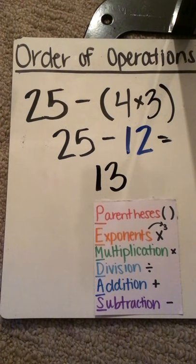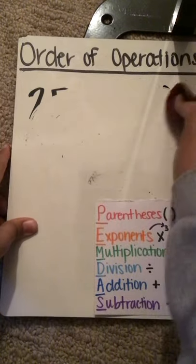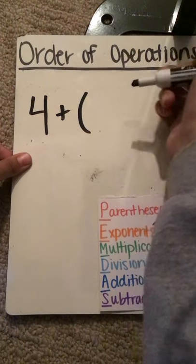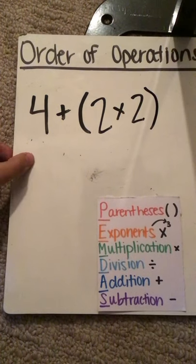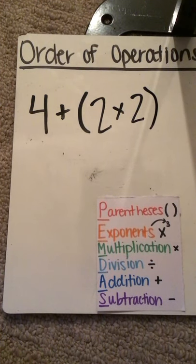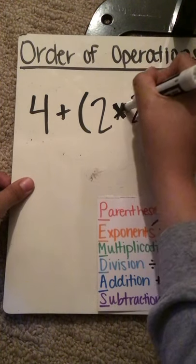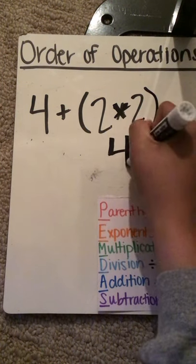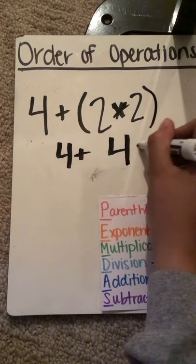Let's do another practice problem here. So we're going to do four plus, in parentheses, two times two. So here I've got my parentheses. So I know that two times two equals four. And I know that four plus four equals eight.